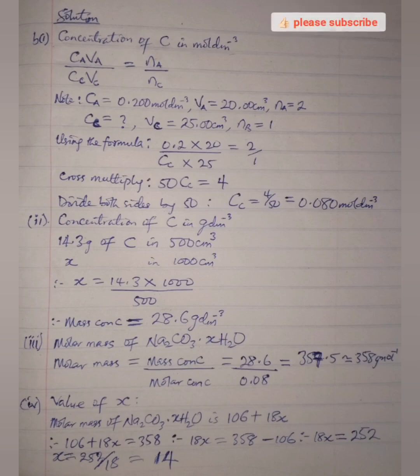When you are asked to calculate in grams per dm³, that is mass concentration. Don't forget. So mass concentration, if you are not given already in the question, for example in this particular question, mass concentration was given as 14.3 grams in 500 cm³. So since it is given in 500, I have to convert it to 1000 cm³ so that it can be grams per dm³.